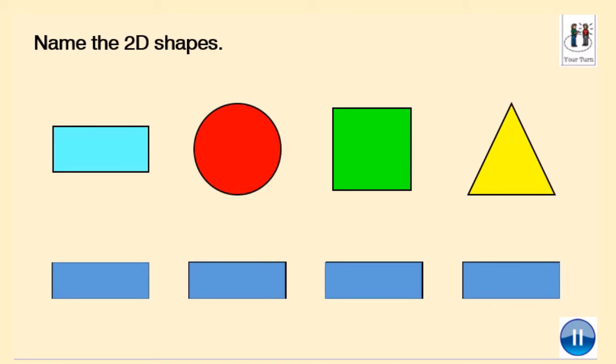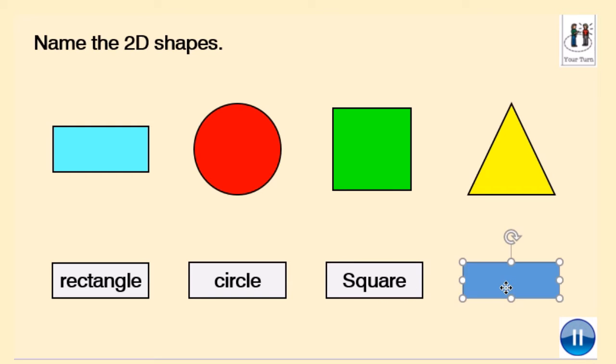Now, name these 2D shapes. You've seen them previously in the video, so can you name them? Write down their names and pause the video. Okay, let's mark them. You have a rectangle, a circle, a square, and a triangle.